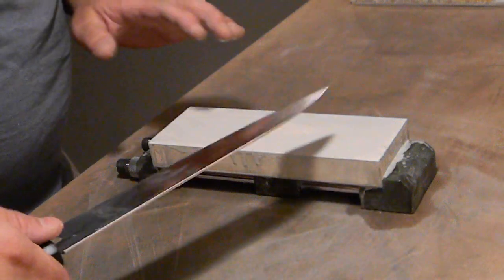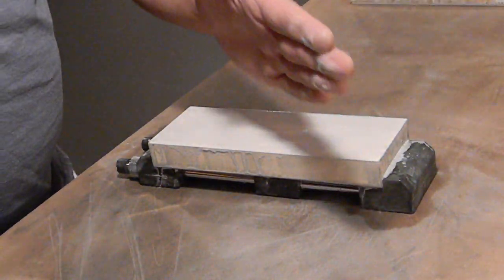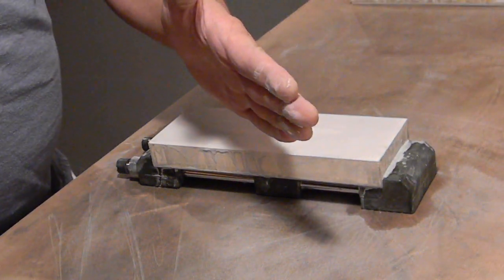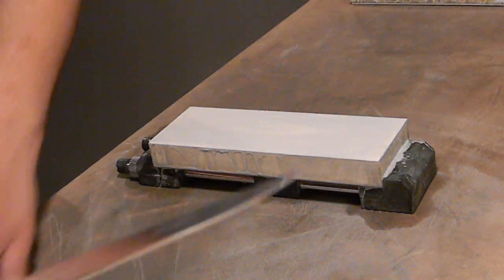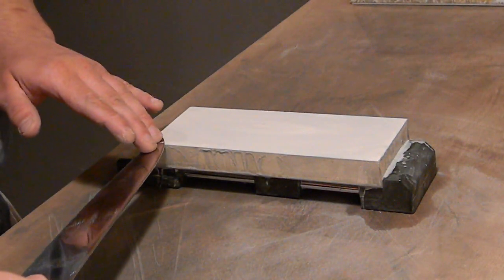What I do is instead of cocking the stone at an angle like I did last time, I'm going to keep it straight ahead. It works out a lot better for me and I kind of just give it a bit of the sweeping technique that I did in the first video.